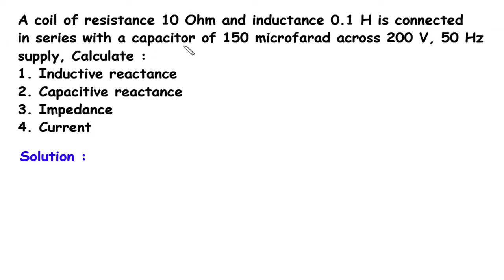If you find this video helpful, feel free to donate whatever amount you can — link is in the description below. A coil of resistance 10 Ohm and inductance 0.1 Henry is connected in series with a capacitor of 150 microfarad across a 200 volt, 50 hertz supply. Calculate: number 1 inductive reactance, number 2 capacitive reactance, number 3 impedance, and number 4 current.